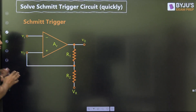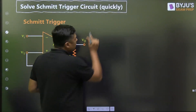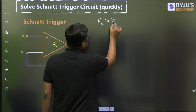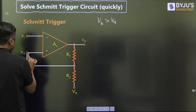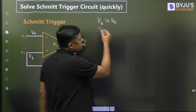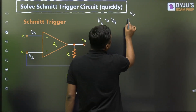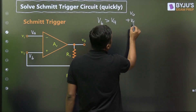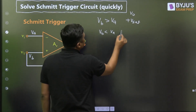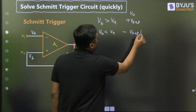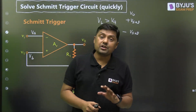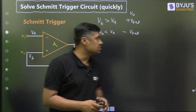Because of positive feedback there will be two cases. If VB, that is the positive terminal voltage, is greater than VA, the output is plus V-sat. And if VB is less than VA, the output is minus V-sat. The operational amplifier will remain in saturation, whether it is plus V-sat or minus V-sat.